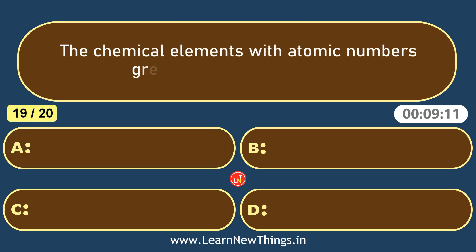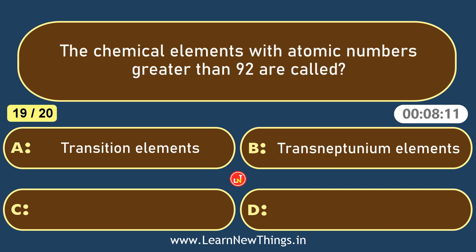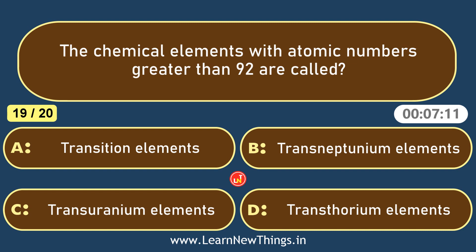The chemical elements with atomic numbers greater than 92 are called transuranium elements.